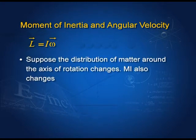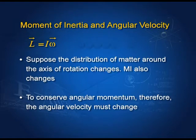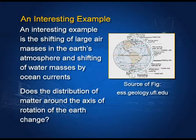So moment of inertia is a function of two things: the axis of rotation and the distribution of matter around it. Since L = Iω, if the distribution changes and moment of inertia changes, and if L is to remain constant because there is no torque acting, then ω must change. So to conserve angular momentum, the angular velocity changes if there is a change in the distribution of matter around the axis of rotation. The winds in the atmosphere carry a large mass around the earth, so the mass distribution changes because of wind flows.